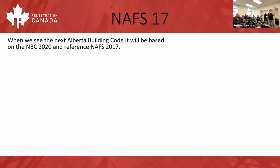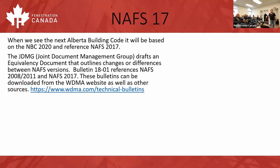So NAFS 2017: the next Alberta building code is going to be based on the NBC 2020, published last March, and it references NAFS 2017 — so that's what you're going to have to have your products tested to. There's the JDMG — the Joint Document Management Group — a three-party group made up of members from CSA, FGIA, and WDMA, and that group basically updates and manages the NAFS document.